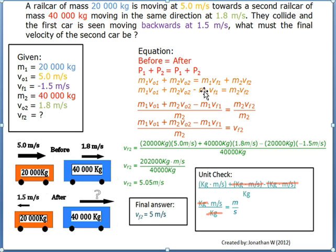First, we subtract M1VF1 from both sides to isolate M2VF2. Then, we divide both sides by M2 to finally isolate VF2, or the final velocity of the second car.